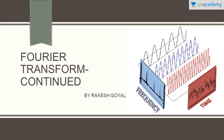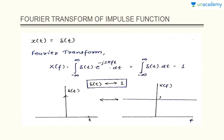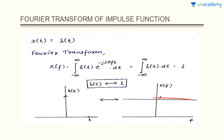So, let's continue our discussion on Fourier Transform. In the last lecture, we derived the Fourier Transform of the impulse function and it came out to be 1. That is, the impulse function contains all the frequencies from 0 to infinity. Now, let us understand some very important properties of Fourier Transform which we'll be using while analyzing our various modulation techniques. This lecture will be very important for understanding the various types of modulation techniques, so I recommend that you understand each and every aspect clearly.